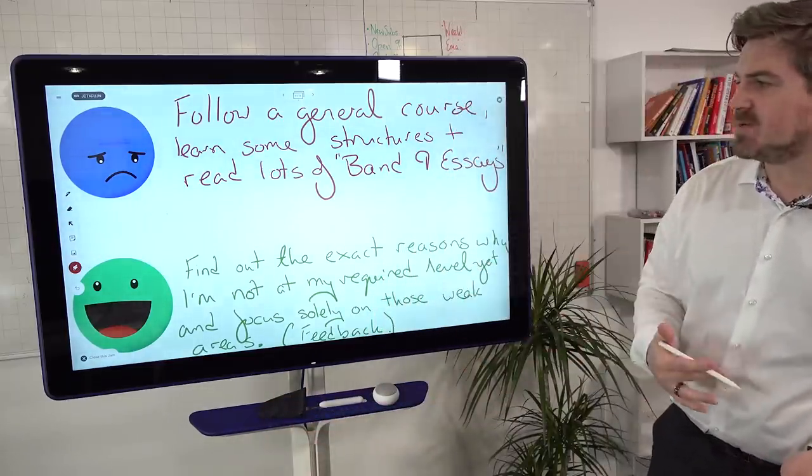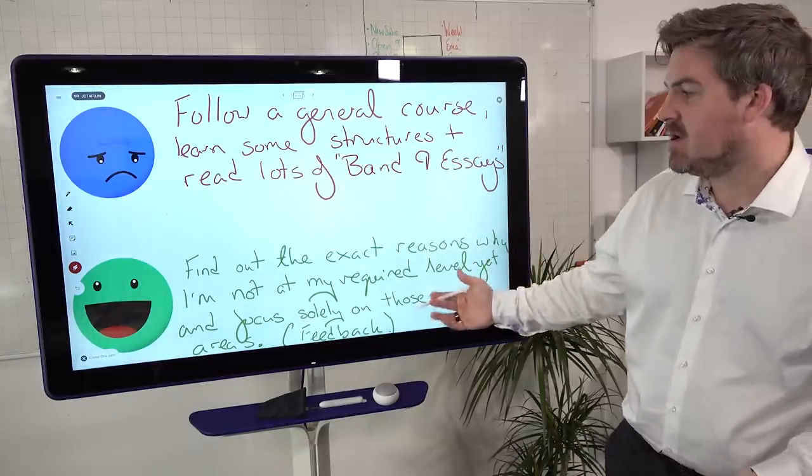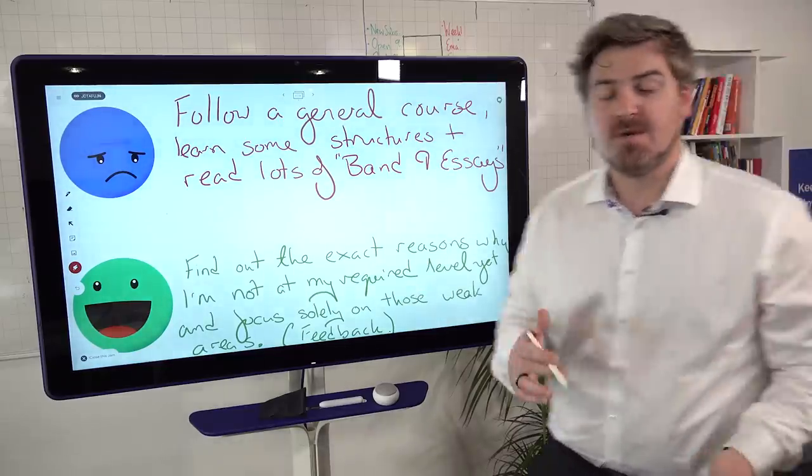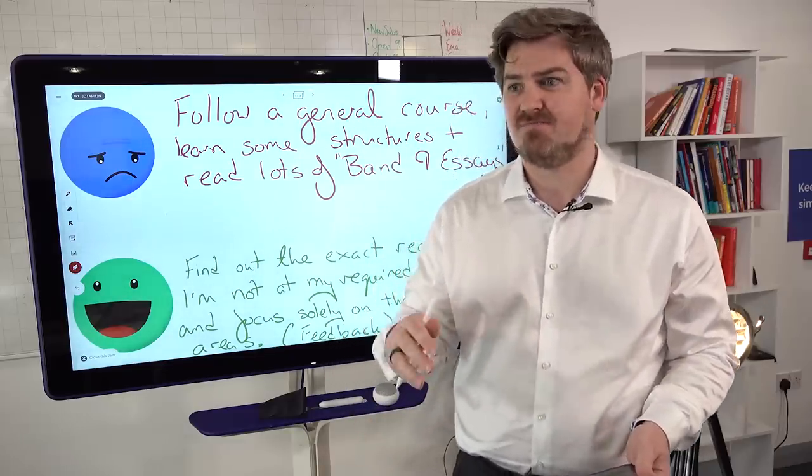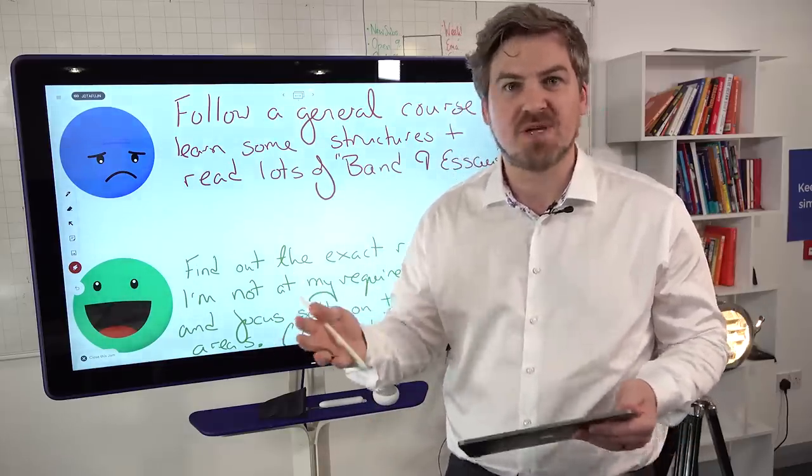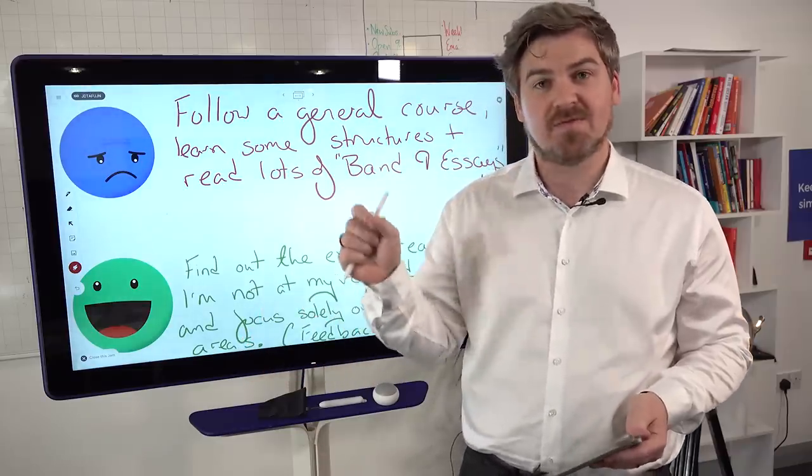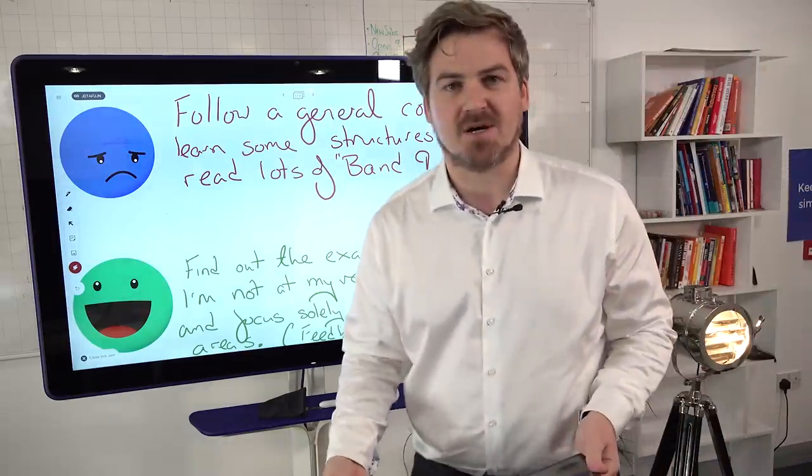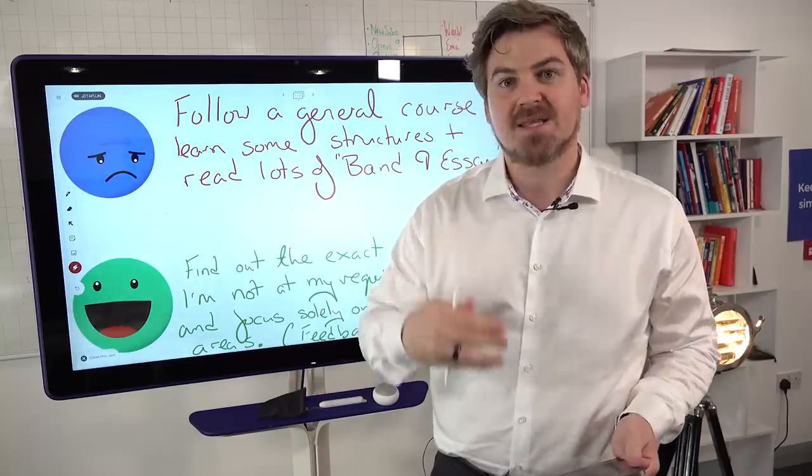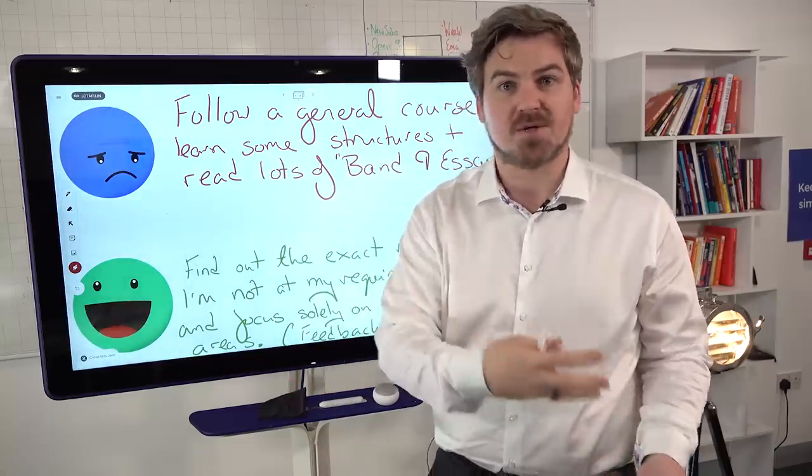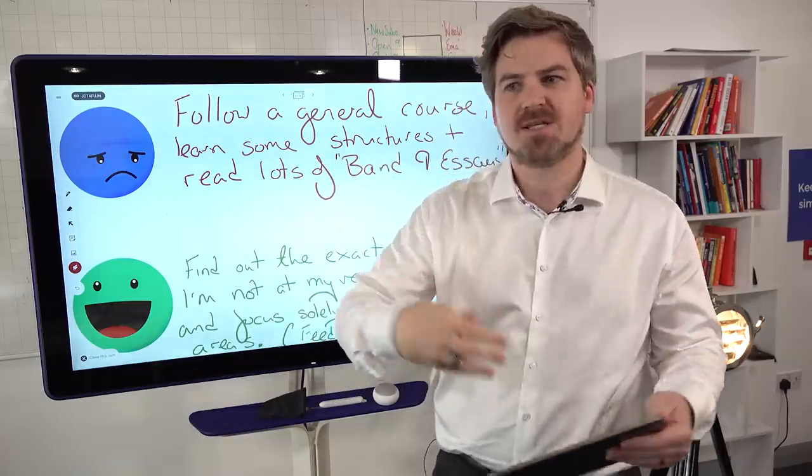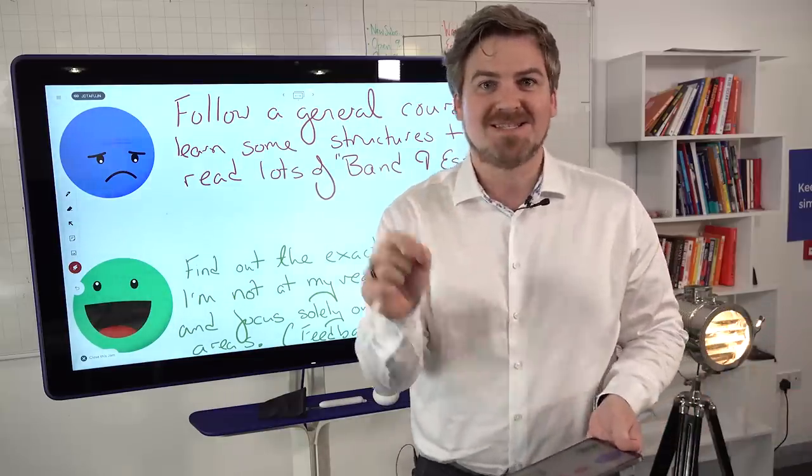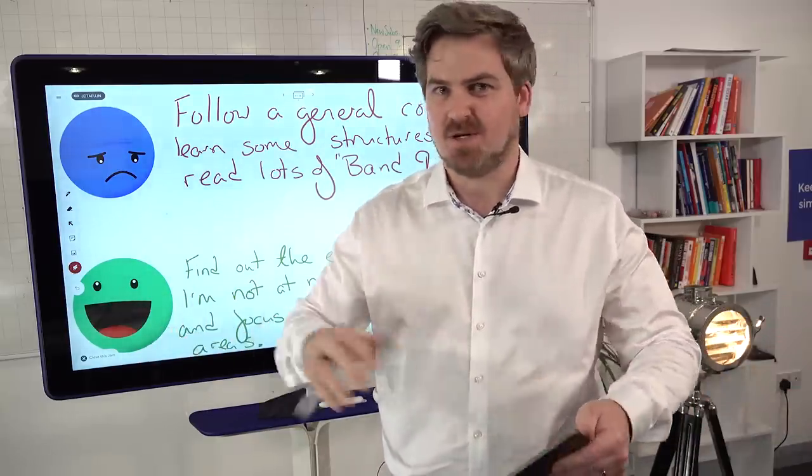Whereas our students, what they would do is find out the exact reasons why I'm not at my required level yet and focus solely on those areas. For most of you, the reason why you are failing is just maybe a small handful of areas, maybe three or four things that you need to work on. And until you fix those things by getting feedback on your work and understanding what those things are, nothing else is going to help you. So getting the help that you need and getting the feedback on your writing and your speaking, your reading, your listening. And then just like taking your car to a mechanic or going to a doctor when you feel ill, they are going to fix the exact thing that's wrong with you, not give you a general course.